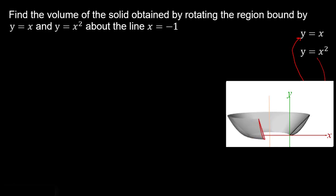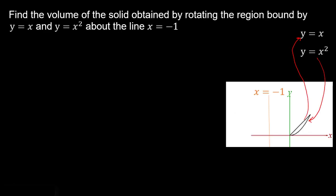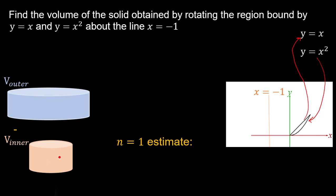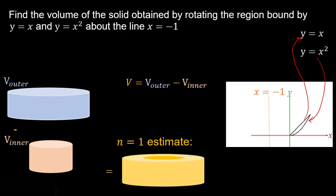You can see that our area is rotating around that x equals negative 1 line. The solid might look hard to find, but it's actually not too bad. We'll start off with our typical n equals 1 estimate to get an idea of the approach. Our general approach is to find an outer volume and subtract an inner volume — like drilling out the middle of a bigger cylinder — giving us a hollow cylinder estimate.